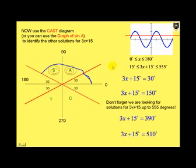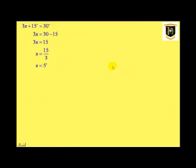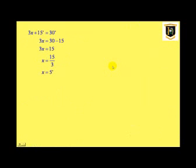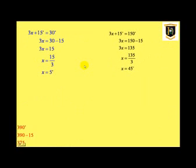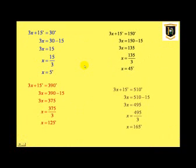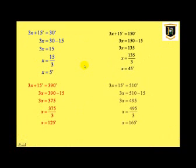Now what we have to do is solve these for x. 3x + 15 = 30, solve with simple algebraic manipulation to give x = 5 degrees. 3x + 15 = 150 gives x = 45 degrees. 3x + 15 = 390 gives x = 125 degrees, and 3x + 15 = 510 gives us x = 165 degrees. We have 4 final solutions: 5 degrees, 45 degrees, 125 degrees, and 165 degrees.